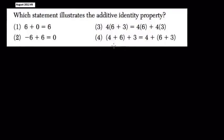They want to know which statement illustrates the additive identity property. It's actually the first one, which is nice, because here they have 6 plus 0 equals 6.